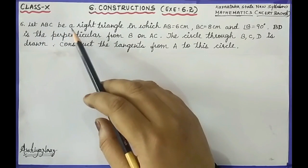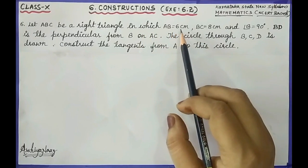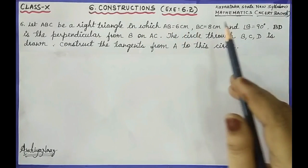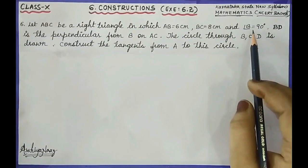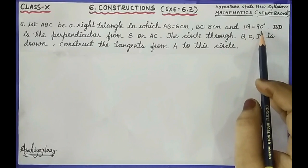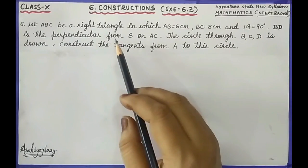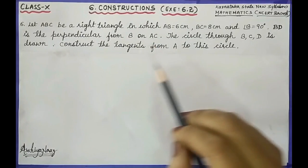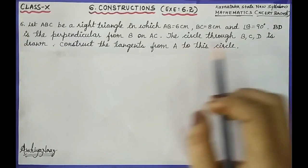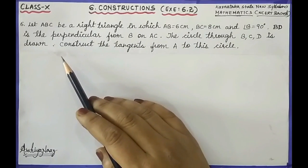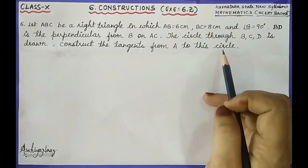Let ABC be a right triangle in which AB is equal to 6 cm, BC equal to 8 cm, and angle B is equal to 90 degrees. BD is the perpendicular from B on AC. The circle through BCD is drawn. Construct the tangents from A to this circle.